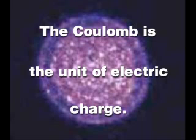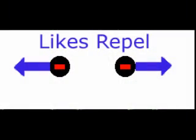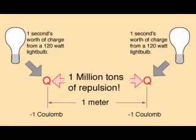If two point objects, hypothetical objects having no appreciable surface area, were equally charged to a measure of one Coulomb, which is the charge that flows through a 120 watt light bulb every second, and placed one meter, approximately one yard apart, they would generate an enormous force of repulsion of about 9 billion newtons, or approximately 1 million tons.